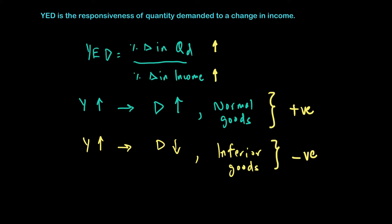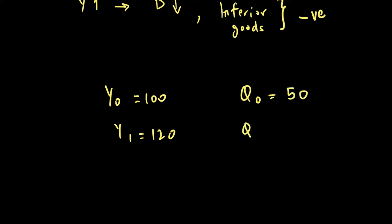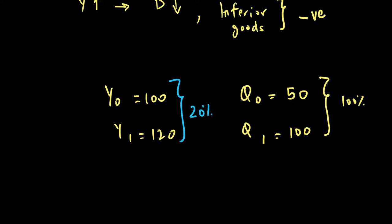Let's look at an example focusing on normal goods. Say your income was previously 100 and has gone up to 120. The quantity of a good you were buying was previously 50, and now because of the rise in income it has gone to 100. The percentage change in quantity demanded is (100 − 50) / 50 = 100%. The percentage change in income is (120 − 100) / 100 = 20%. So YD = 100% / 20% = +5.